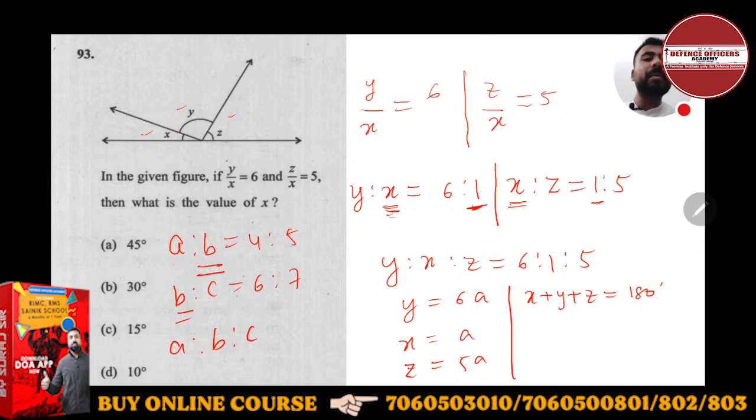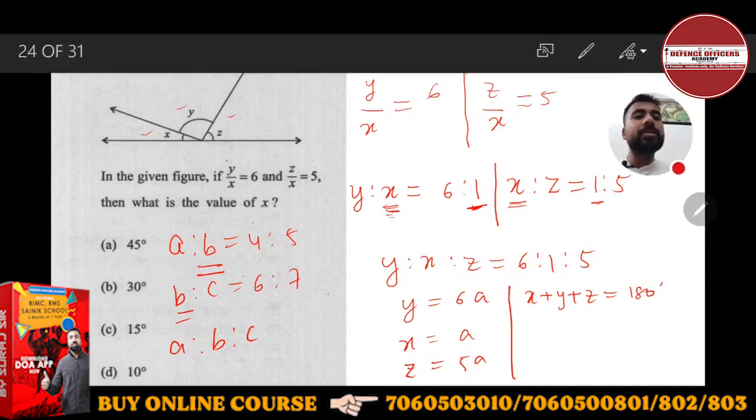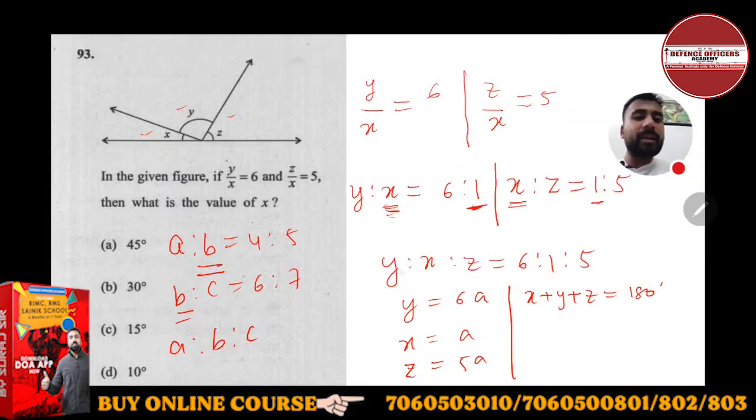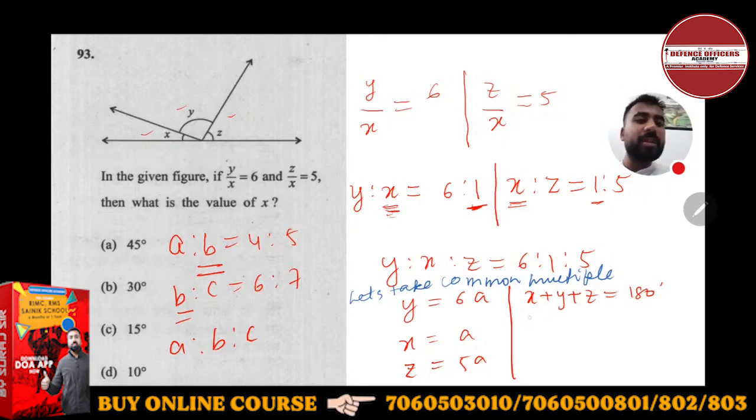After merging, I have taken a common multiple. To convert ratio to value, we take common multiple. Let's take a as the common multiple. If you add them, this will be 12a equals 180.